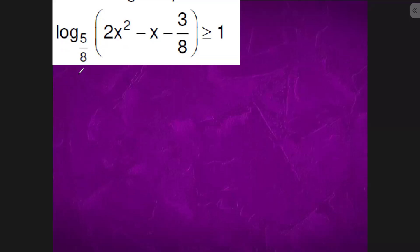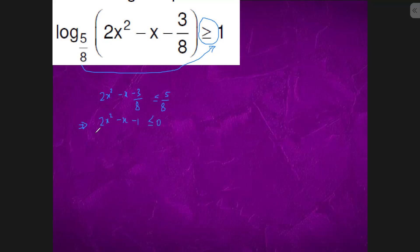In this question the base is less than 1, so when we send to this side, the inequality sign will get inverted. So it will be 2x² - x - 3/8 ≤ 5/8. Taking 5/8 to one side, it becomes 2x² - x - 1 ≤ 0, which factors as (2x + 1)(x - 1) ≤ 0. When we plot on the number line with -1/2 and 1, the solution is x ∈ [-1/2, 1].